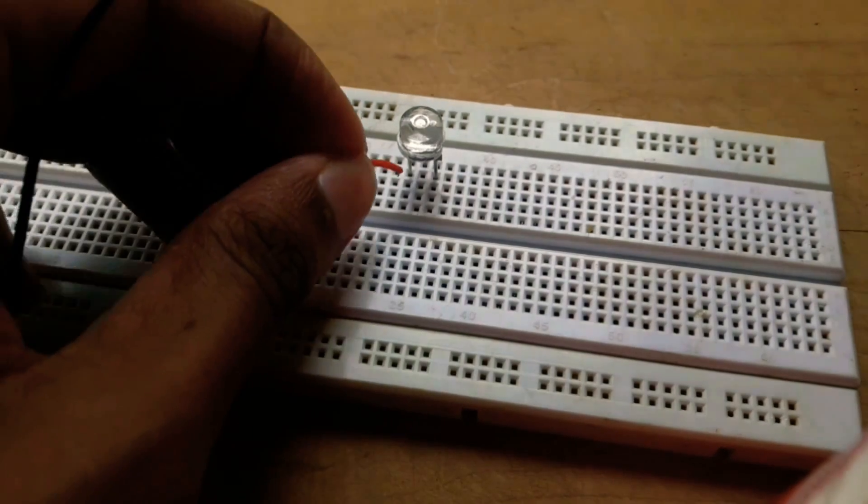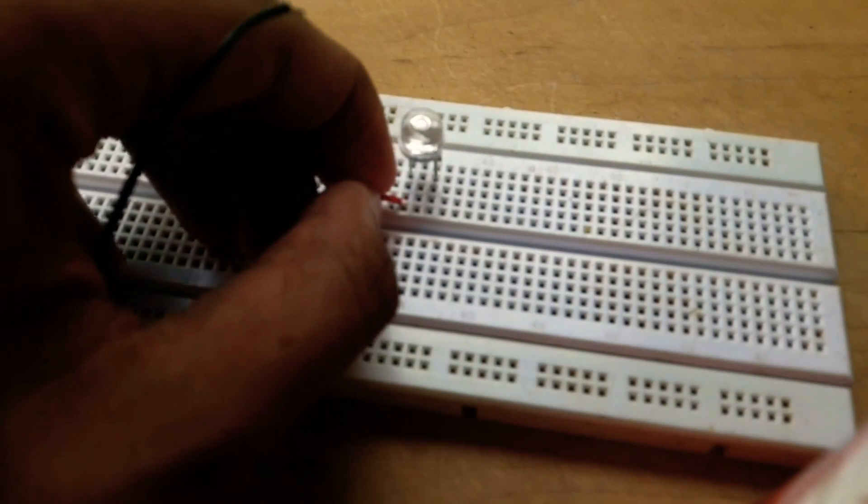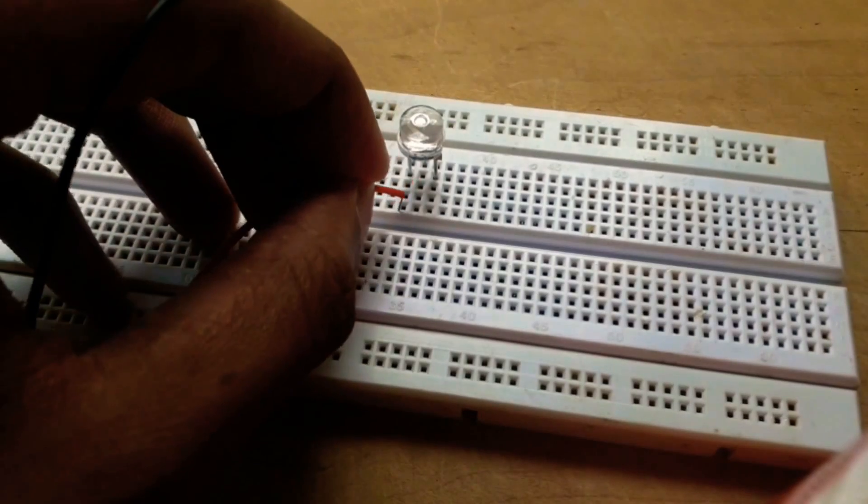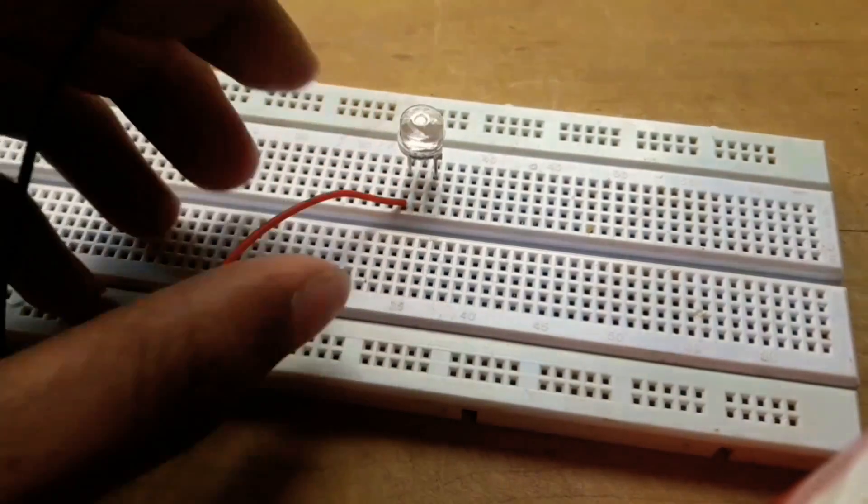Now connect the positive side of the battery to the first pin of the Hall Effect Magnet Sensor and the negative side of the battery to the center pin.